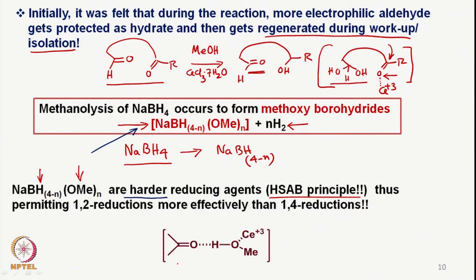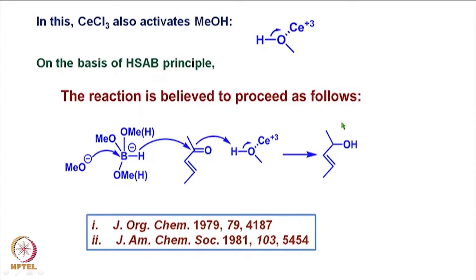It is clear that a species of this kind should be involved because even methanol has coordination with Ce³⁺. The modified methoxy borohydride then acts as a reducing agent, where the carbonyl oxygen has interaction with H. Because this can become delta-plus, there is coordination of the oxygen with the H⁺, which comes from methanol. Cerium chloride activates methanol in this fashion, making the proton very labile and a harder acid.